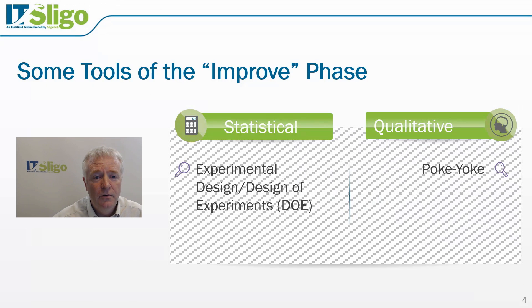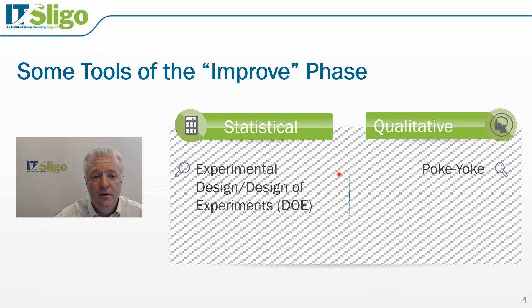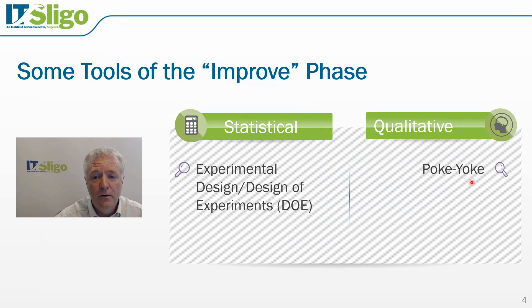There are a number of tools in the Improve phase of the DMAIC process. These include statistical tools such as experimental design, and also qualitative tools such as poka-yoke, or error proofing.